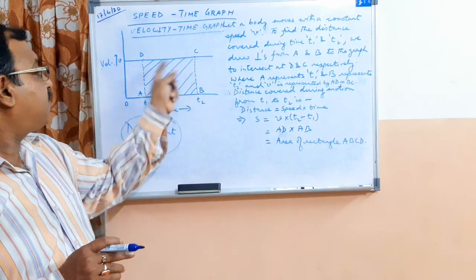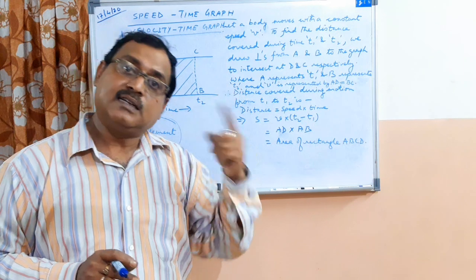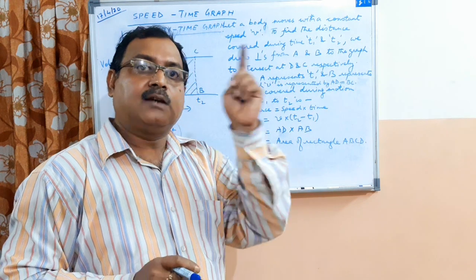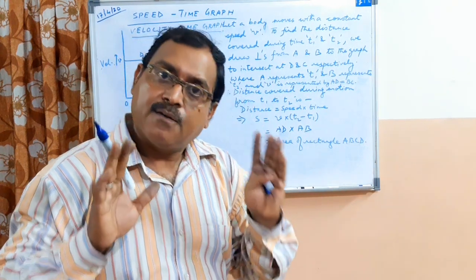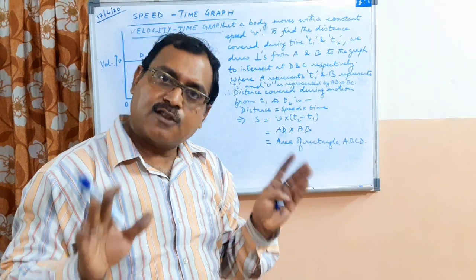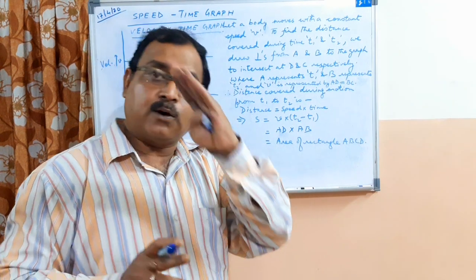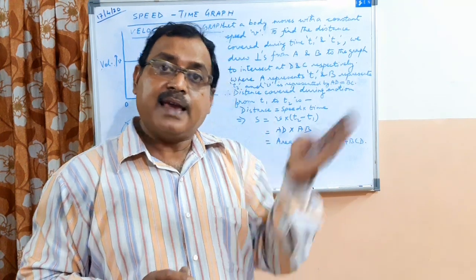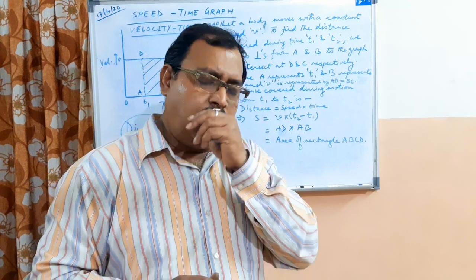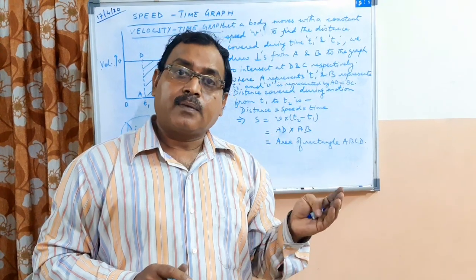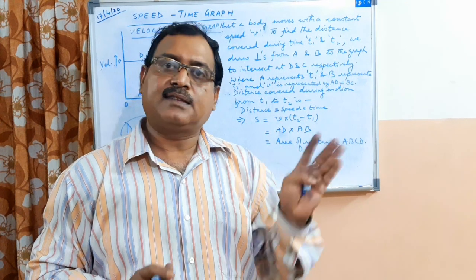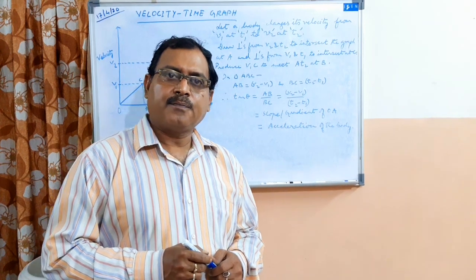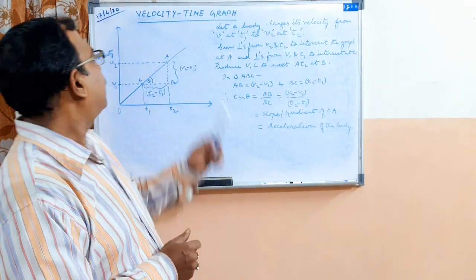Always remember: the area of the figure formed in a speed-time graph gives distance, the area in a velocity-time graph gives displacement, the slope of a distance-time graph gives speed, and the slope of a displacement-time graph gives velocity. Don't get confused — slope gives either speed or velocity, and area gives either distance or displacement, as the case may be.